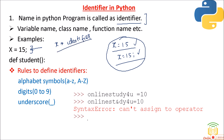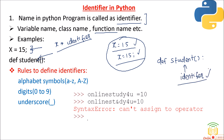Here the function name a_student is an identifier. Please keep all these things in mind because these points are very important when you go for interviews. So your function name, variable name, class name — any name in Python is called an identifier. Now there are certain rules to define an identifier.